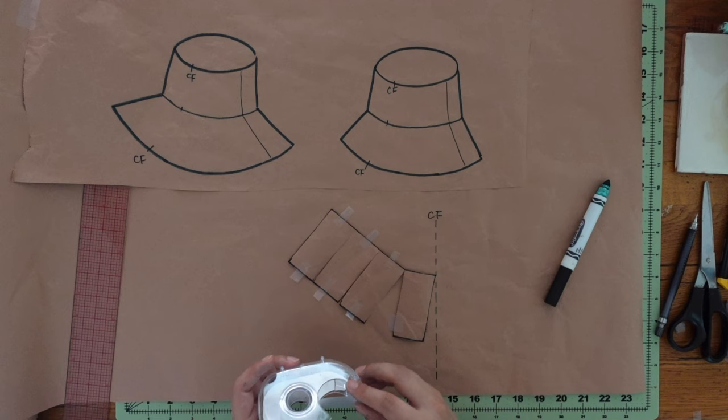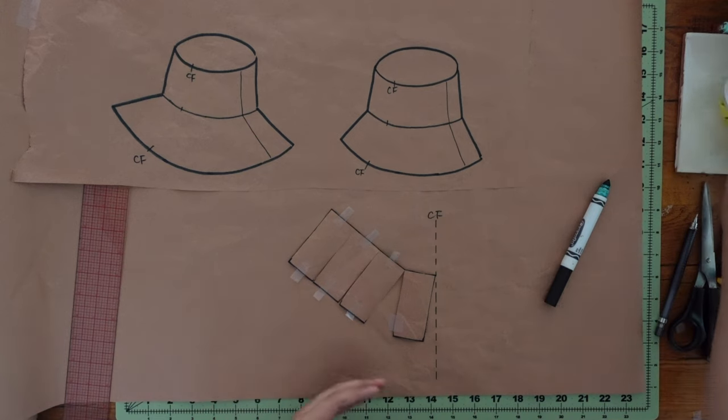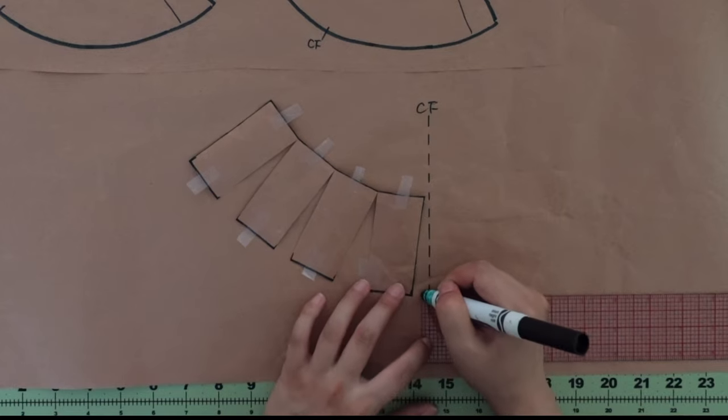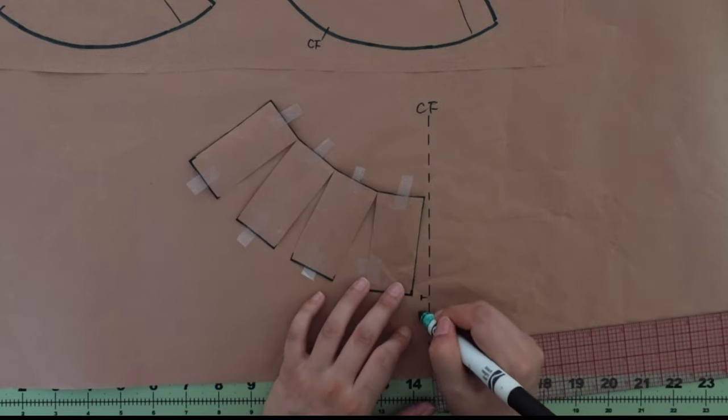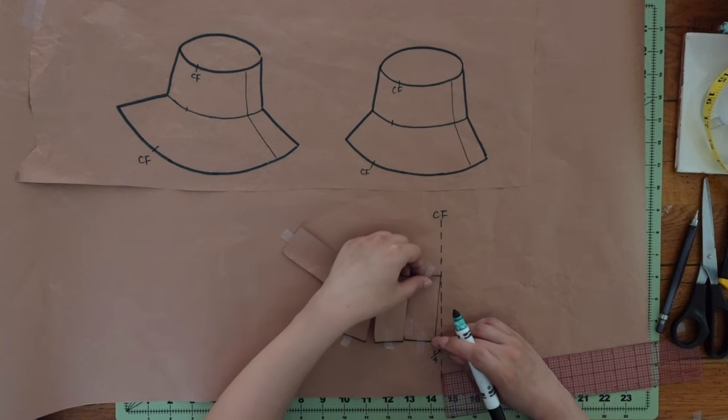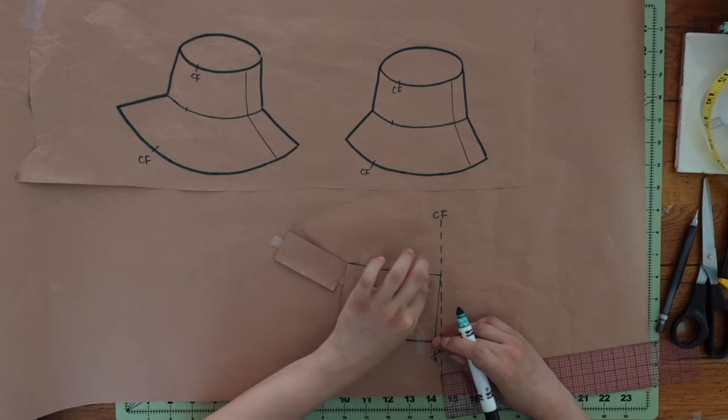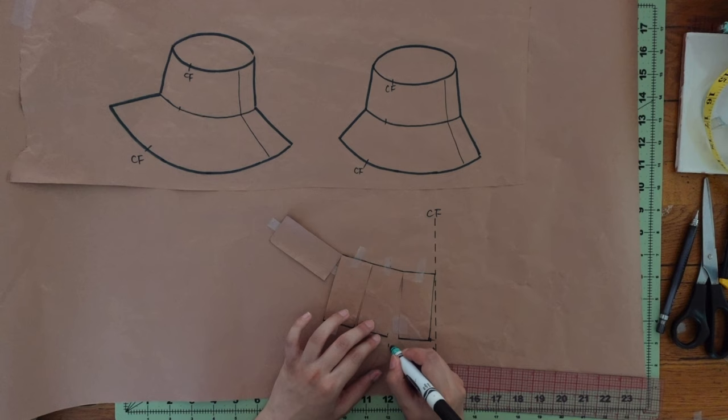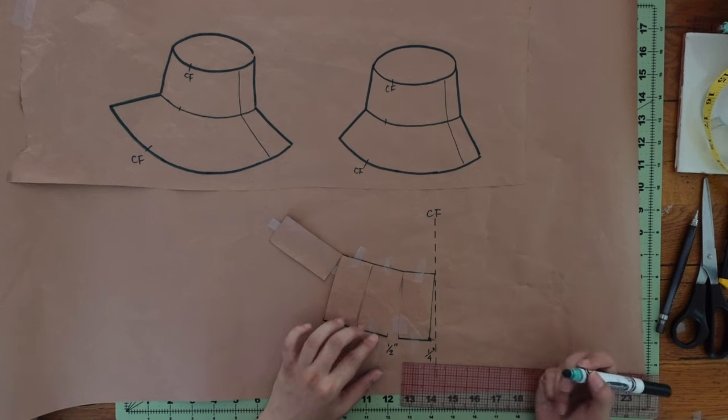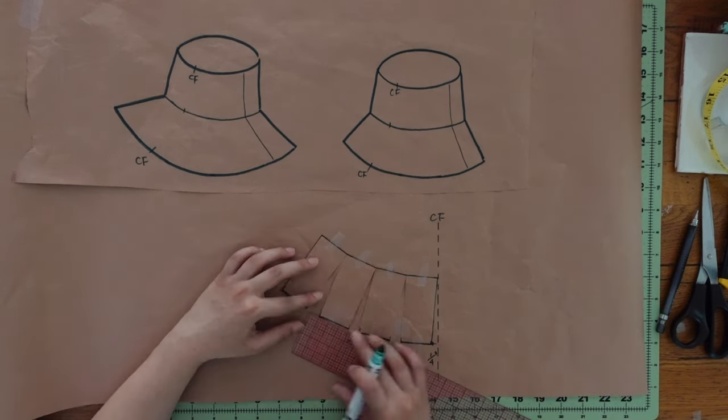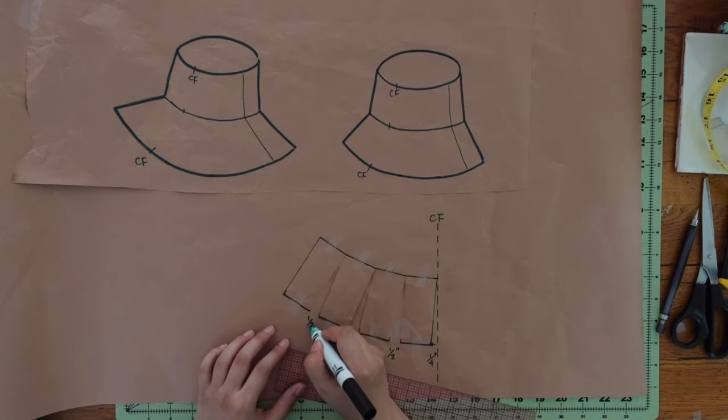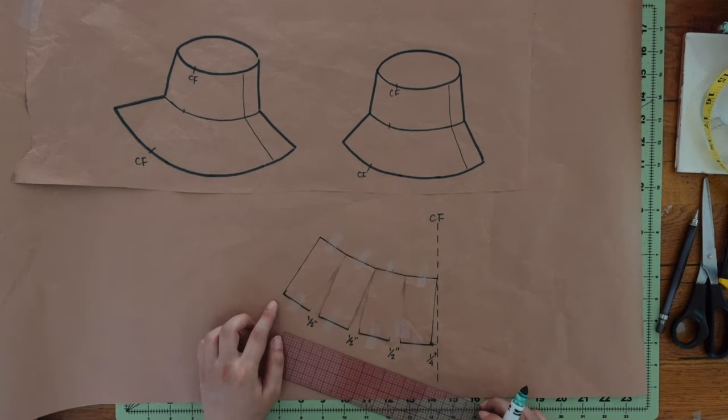First, I'm going to do this narrow brim. Draw the center front line and measure a quarter inch from the line. Place the corner of the rectangle at the point and place another corner at the center front line. Add half inch gaps to all the folded lines you just cut. And at the end of the rectangle, add quarter inch to match the center front.